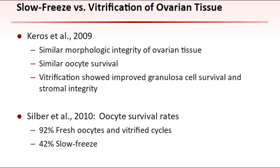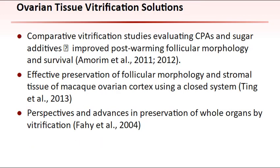Although initial data suggest that vitrification of ovarian tissue may be the favored approach, outcome studies are needed before vitrification replaces slow freezing as the standard method. Comparative vitrification solution trials have been initiated to identify optimal solutions for ovarian tissue cryopreservation. Recent studies of metastable vitrification solutions in a closed device applied to a macaque model have provided promising results in maintaining the structural viability of ovarian tissue. There have also been promising developments in the cryopreservation by perfusion of whole organs, for example kidneys, with metastable vitrification solutions that could have direct application to ovaries.